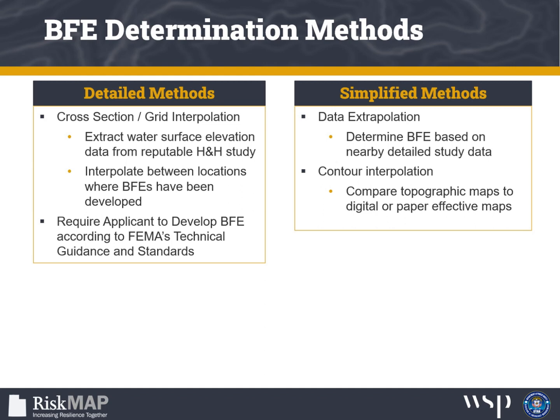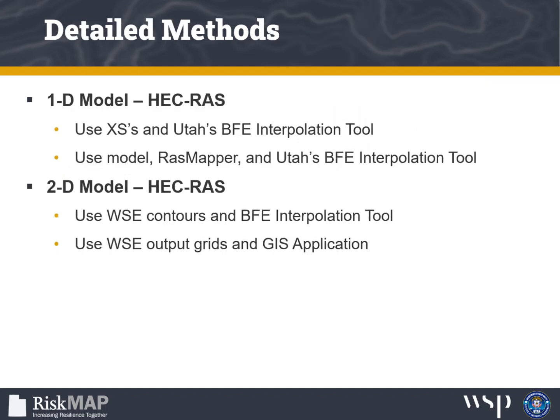Simplified methods can be used when the development size is less than 5 acres and 50 lots. The first method, called data extrapolation, consists of extrapolating a water surface elevation profile from a nearby detailed study to determine the BFE. The second method, called contour interpolation, consists of overlaying the FIRM map on a topographic map and calculating the BFE between the topographic contours. For one-dimensional models, you may have access to cross-section data in GIS format or from a report, and corresponding water surface elevation data in a GIS attribute table, a report table, or the actual HEC-RAS model.